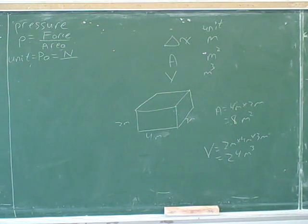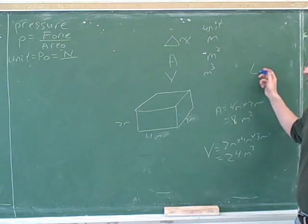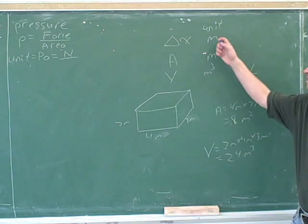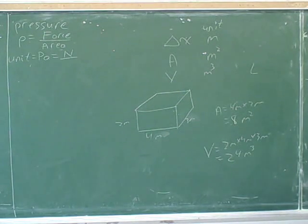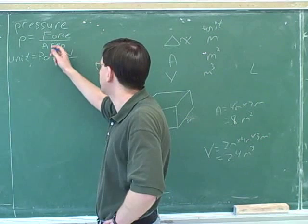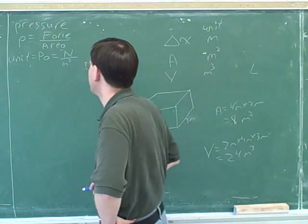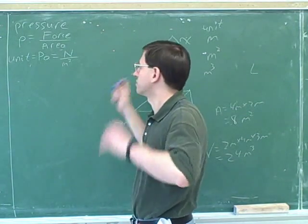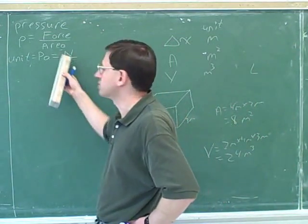SI stands for Système Internationale — those are the standard units in physics. Liters are correct for volume in chemistry, but in physics the standard SI units are meters, square meters, and cubic meters. So the units for area in the pressure formula are meters squared. You could use acres or hectares in ordinary life, but in physics we stick to standard units. We've now seen that a Pascal is newtons per meter squared.